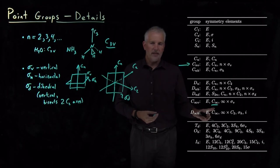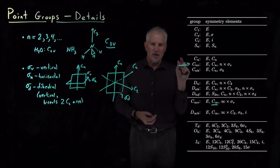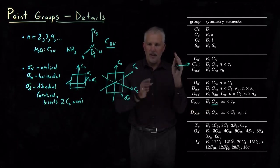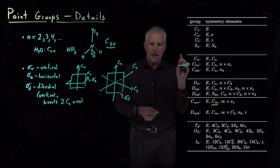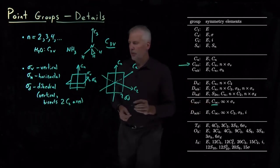A C infinity axis, all that means is if you rotate the molecule by infinitesimally small, an infinitely tiny fraction of a circle, you don't change the molecule.